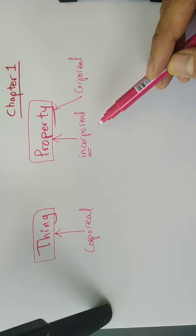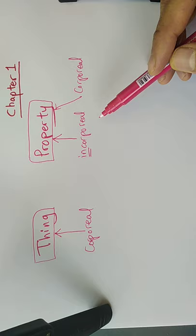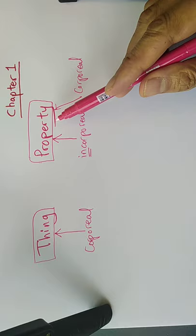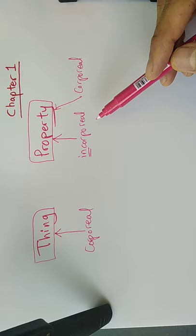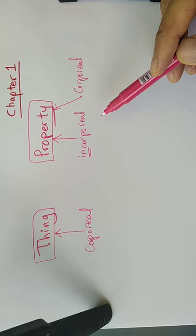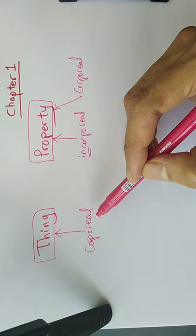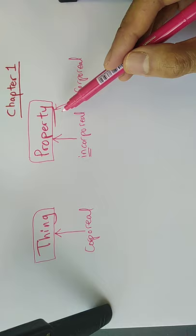Rights — any kind of rights — are incorporeal property. It's not just intellectual property like copyright; any kind of right qualifies. For example, if I'm the owner of a condominium, I have the right to use it and do whatever I want with it. That right is a property because it's incorporeal. Gas is also incorporeal and is a property. So in law, we use 'thing' to specifically refer to something tangible or corporeal.